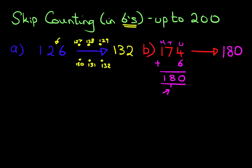So the number after 174, if counting in sixes, is 180. Okay, to finish off with, we're going to look at a number sequence.